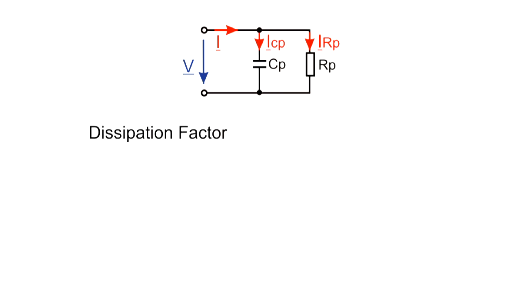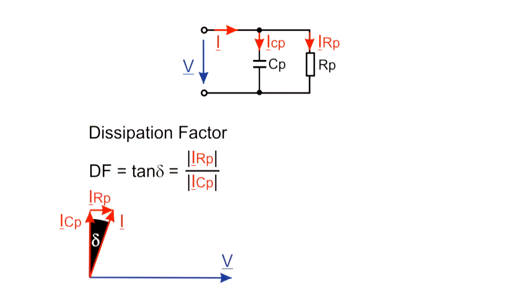As a result of the losses in a real system, represented by the resistor in the equivalent circuit, the phase angle differs from 90 degrees by the angle delta. The dissipation factor is defined as the tangent of this angle delta, hence its alternative name, tangent delta.